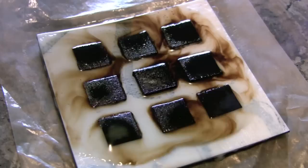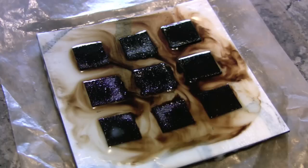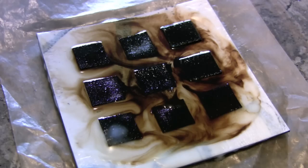You can see here as soon as the blowtorch hits that tar paper, it creates a leaching of some of the materials from the tar paper to swirl out into the wax.